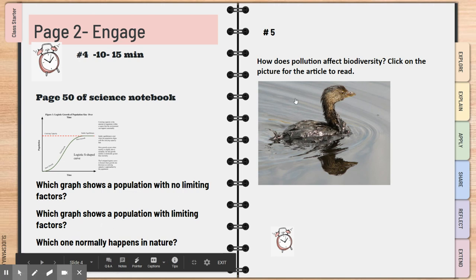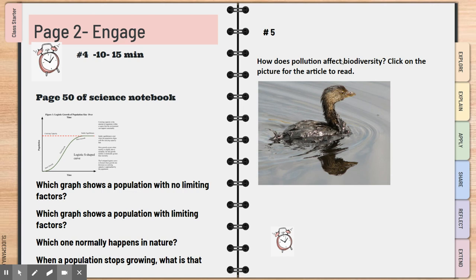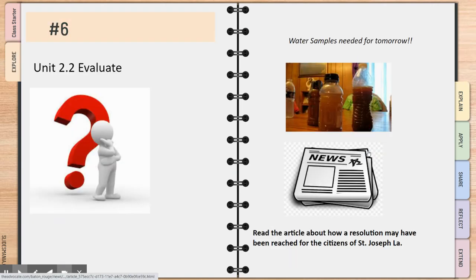Once you're done with that, you have this article to read on pollution and how it affects biodiversity, and then we'll summarize that. The 2.2 evaluate section has some questions to answer.